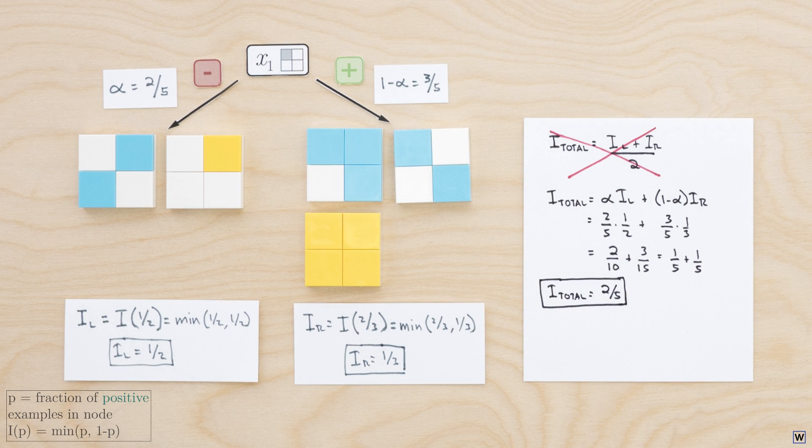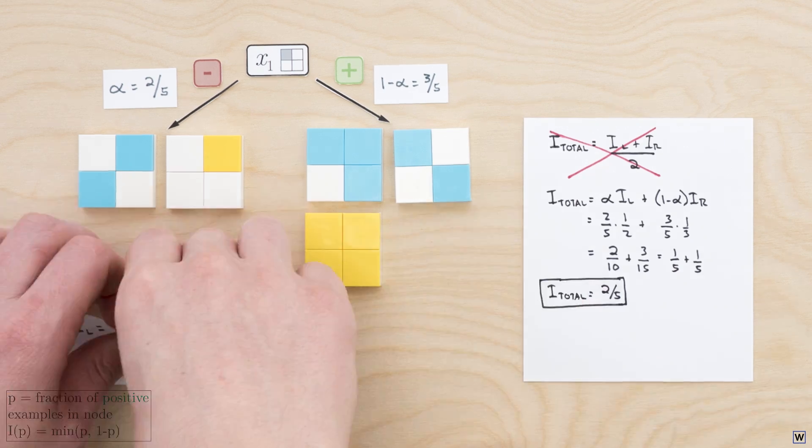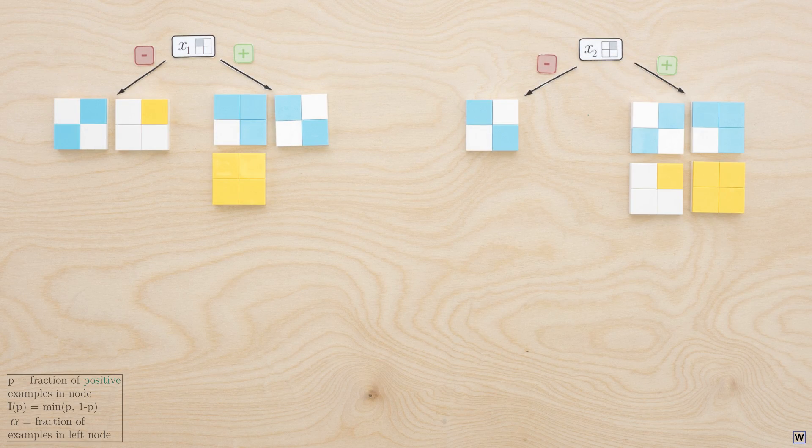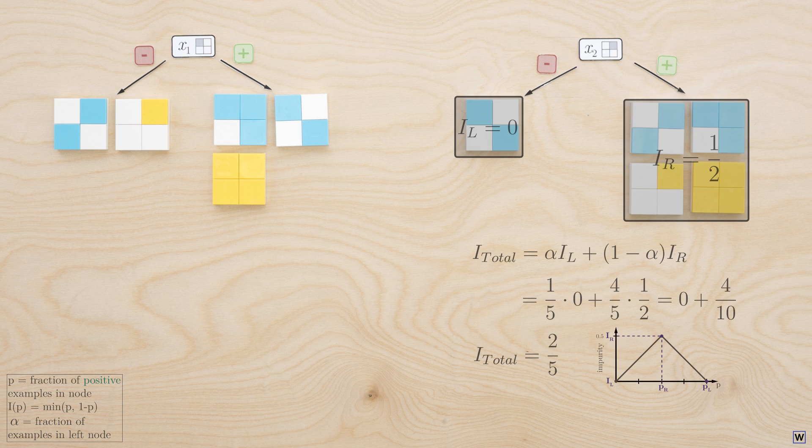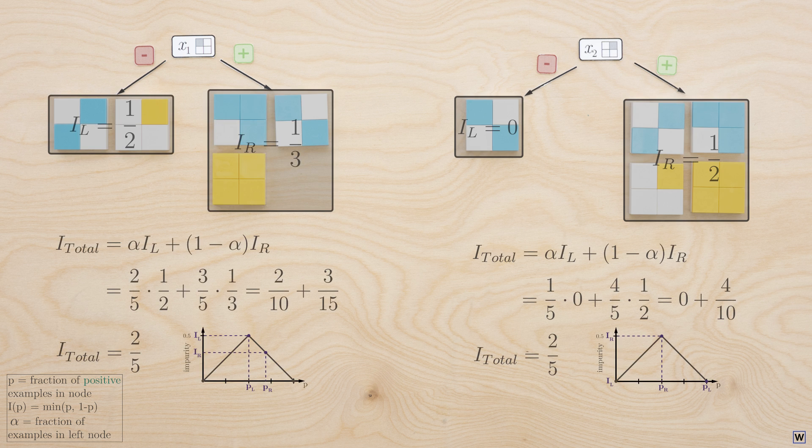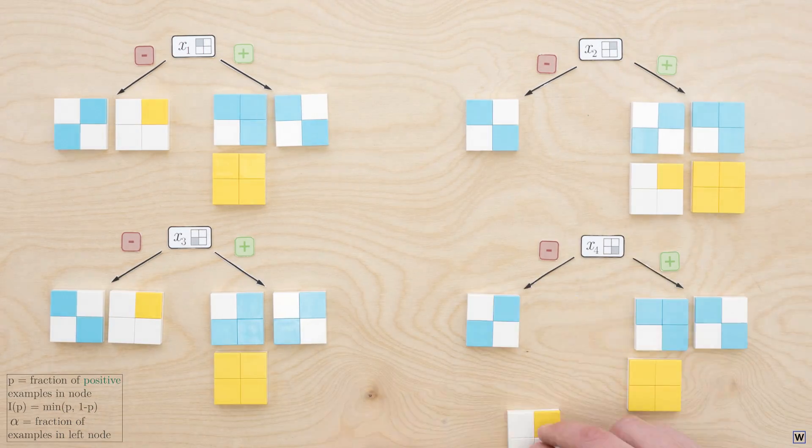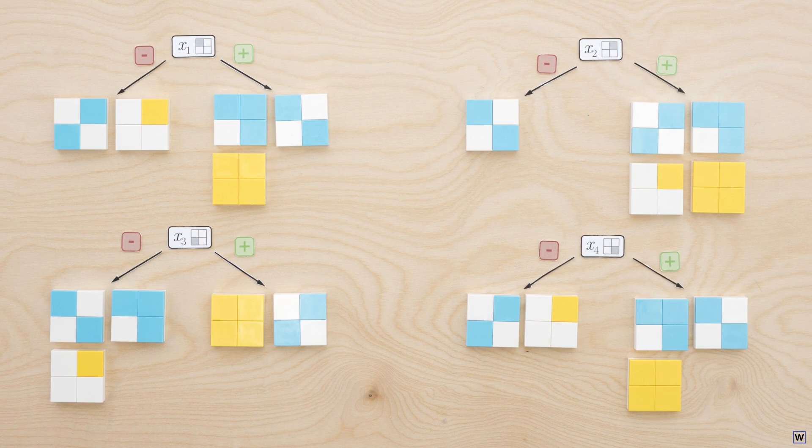We can now use our complete impurity heuristic, the weighted average of our node impurities, to determine which split is best. Let's compute our overall impurity for each split, and we'll choose the split with the lowest value. Our second split yields an impurity of 2 fifths, suspiciously matching the impurity of our first split, which is especially strange considering that our left node is completely pure. And if we compute the impurity of our third and fourth splits, we see the same deflating result.